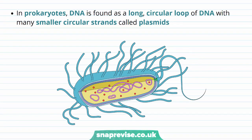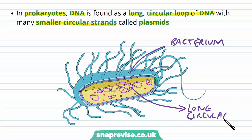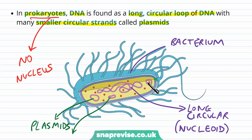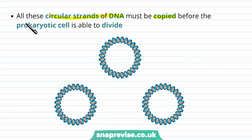In prokaryotes, the setup is slightly different. The DNA is found as a long circular loop, along with lots of smaller circular strands called plasmids. In a bacterial cell, the main DNA is not in a nucleus — it's found as a long circular loop called the nucleoid, referring to the region of genetic material. The most important thing about prokaryotes is that there's no nucleus. As well as the nucleoid, prokaryotes have plasmids — additional circular loops of DNA that are very important in developing medicines. Both the main circular DNA and the plasmids must be copied before the prokaryotic cell divides into two new cells.